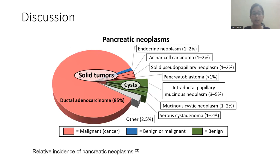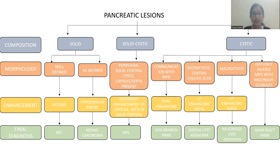The most common pancreatic neoplasm is ductal adenocarcinoma, which is malignant. Other pancreatic neoplasms include cystic and endocrine neoplasms and acinar cell carcinoma. Pancreatic lesions can be solid, solid-cystic, or cystic. If a solid lesion is well-defined and shows intense enhancement, it is suggestive of neuroendocrine tumor. If the solid lesion is well-defined and shows hypoenhancement, it is more in favor of adenocarcinoma.